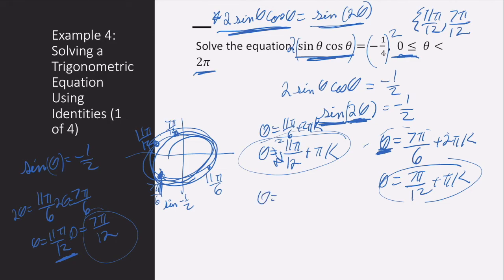If I take theta equals eleven pi over twelve plus pi, that's going to give me twenty-three pi over twelve, which is still less than two pi. We just want to be less than two pi. So now I have twenty-three pi over twelve.